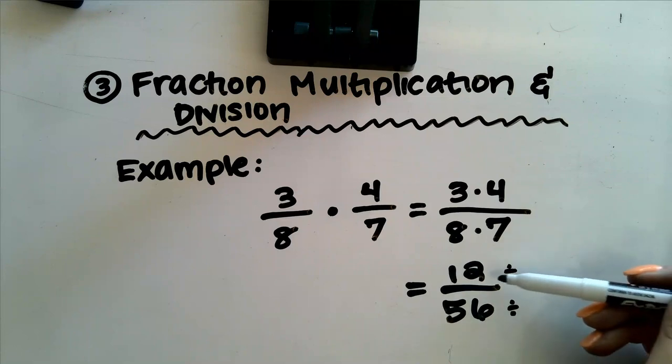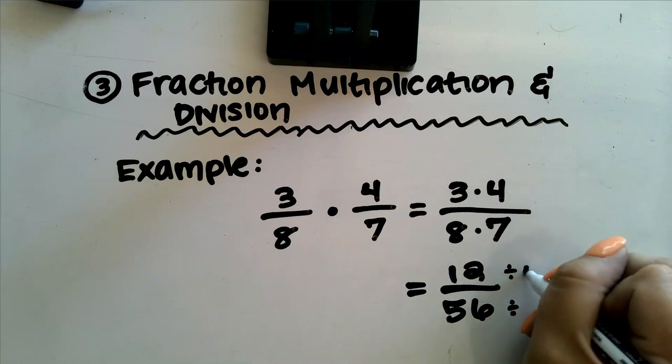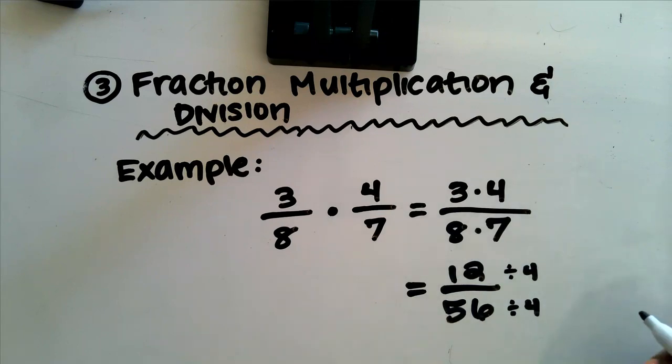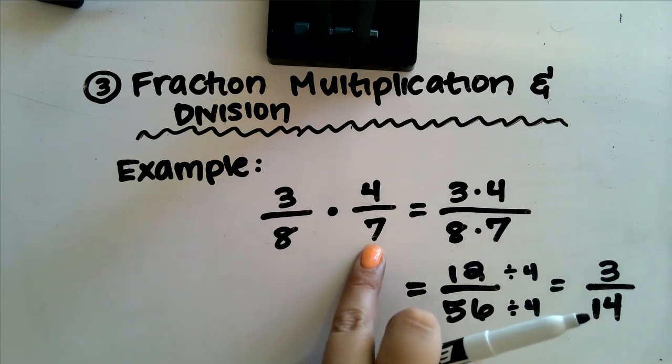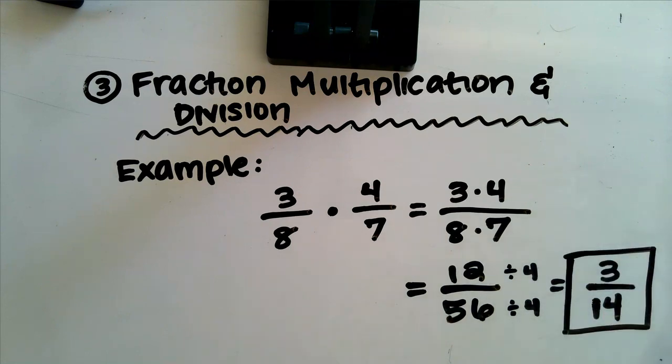In this case, I know that both 12 and 56 are divisible by 4. Note, remember, they have to be the same number on the top and the bottom to divide by. And I know that 12 divided by 4 is 3, and 56 divided by 4 is 14. Therefore, 3 eighths times 4 sevenths is equal to 3 fourteenths.